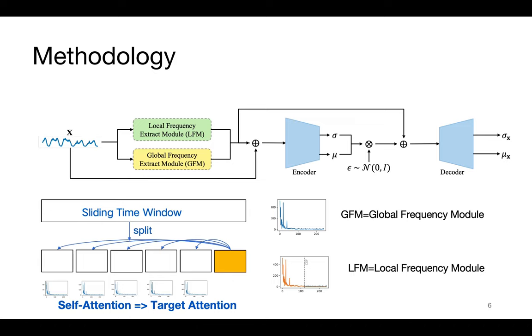GFM directly performs FFT on the entire window to extract global frequency information. LFM splits the entire window into many subwindows and performs FFT, then extracts useful frequency information from each subwindows through target attention.